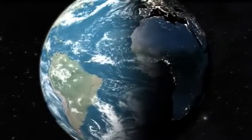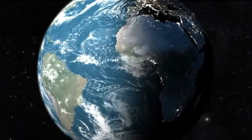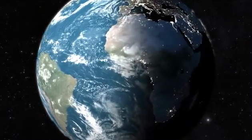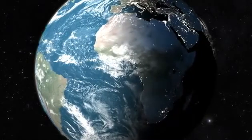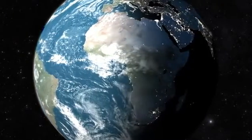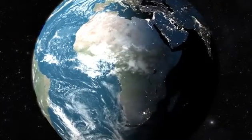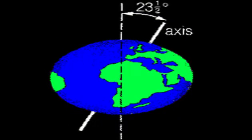The spinning movement of the earth about its axis is called rotation. An axis is an imaginary line about which a body rotates. The earth's axis is an imaginary line that passes through the north and south poles.